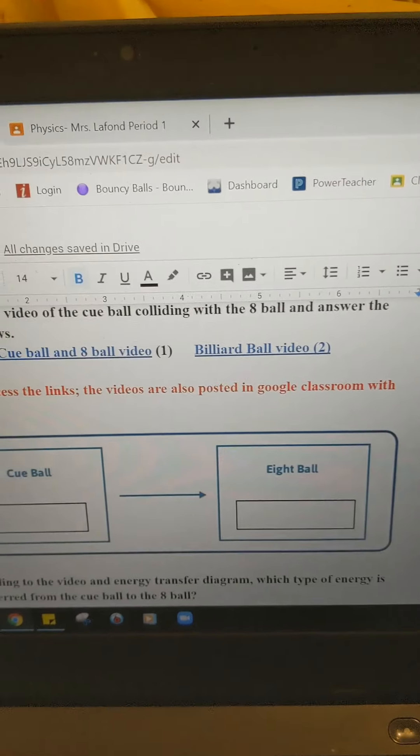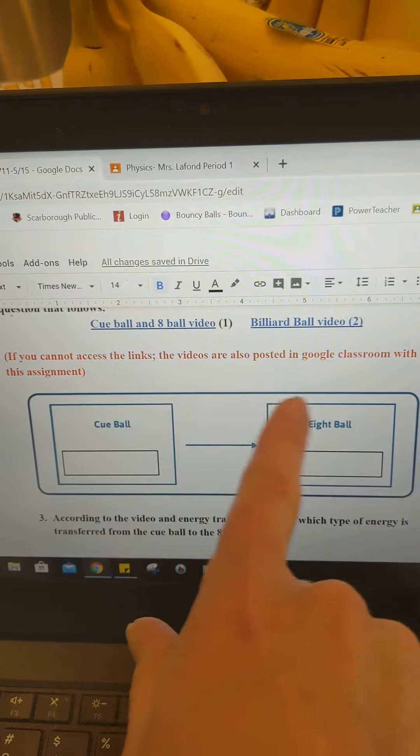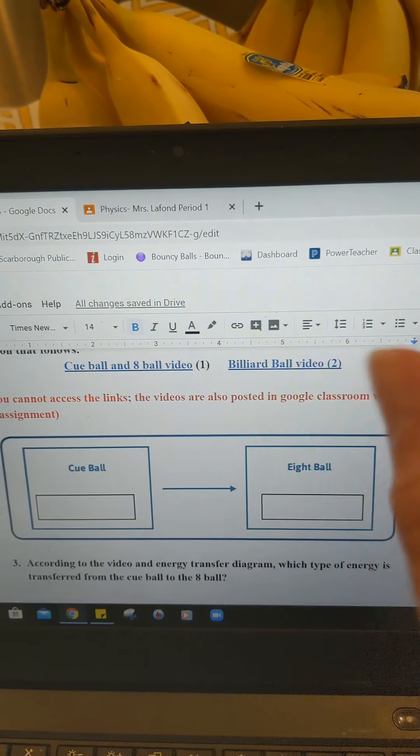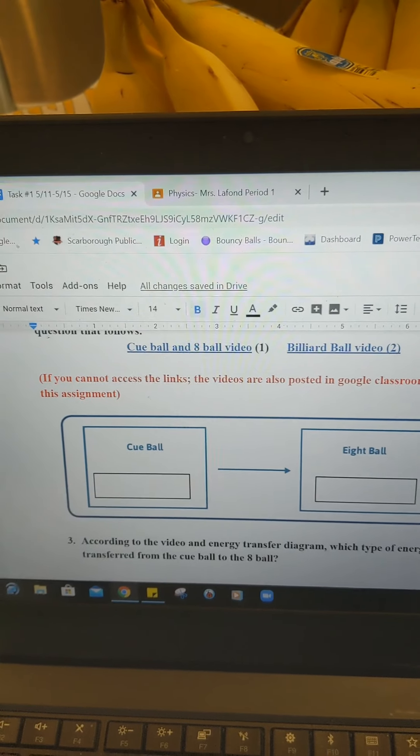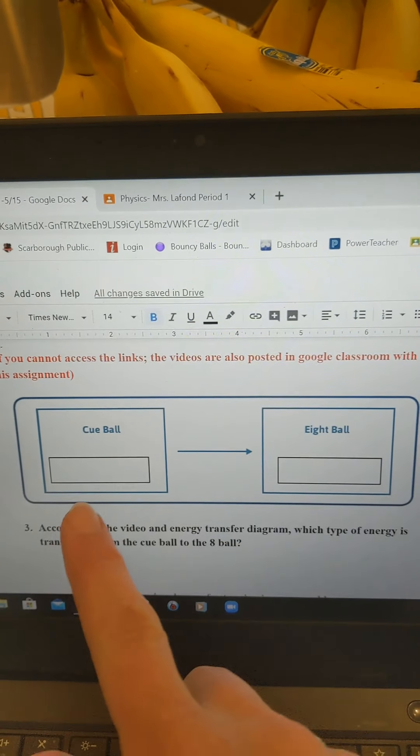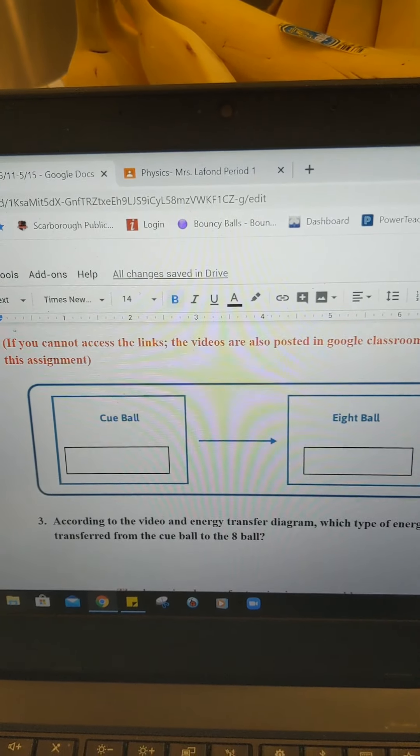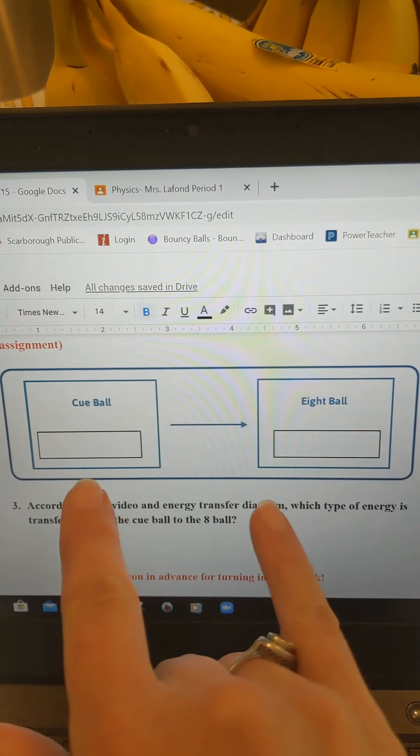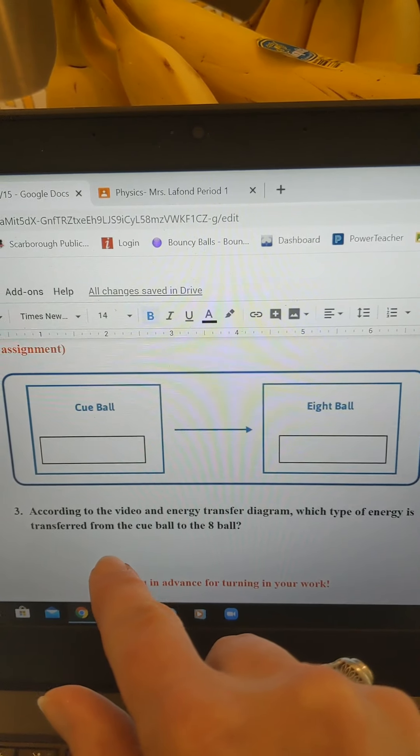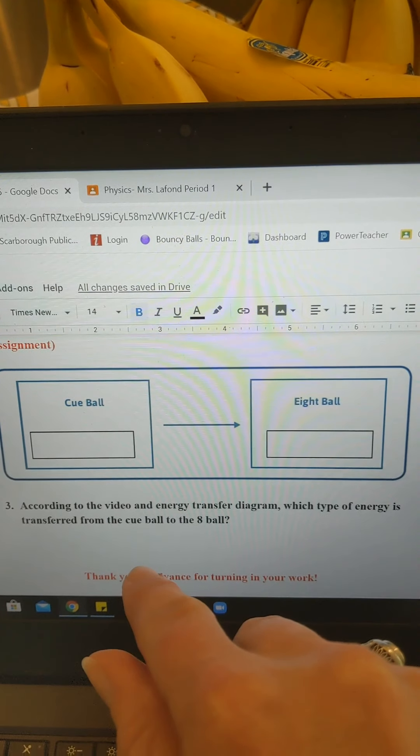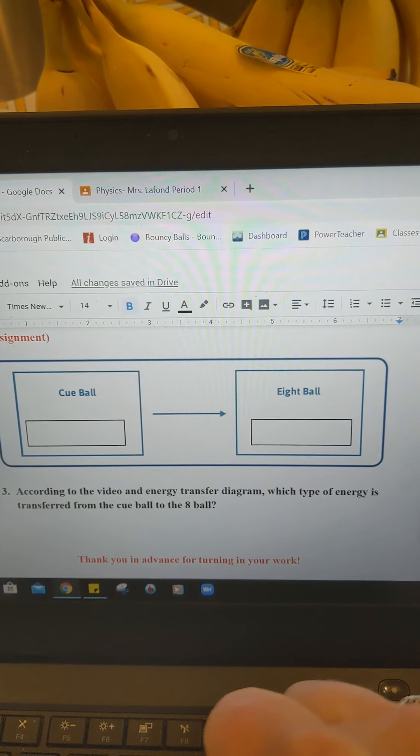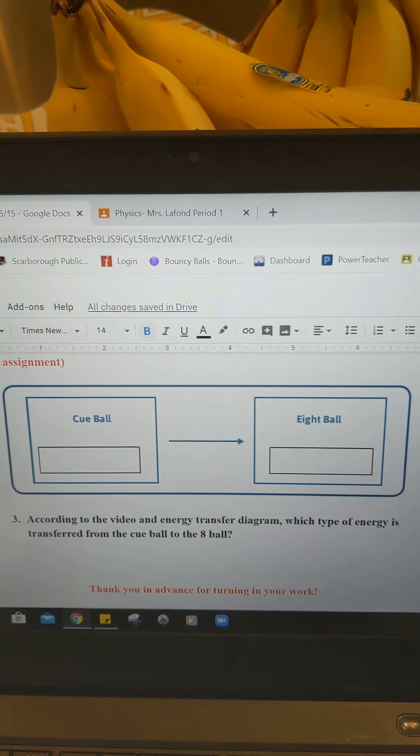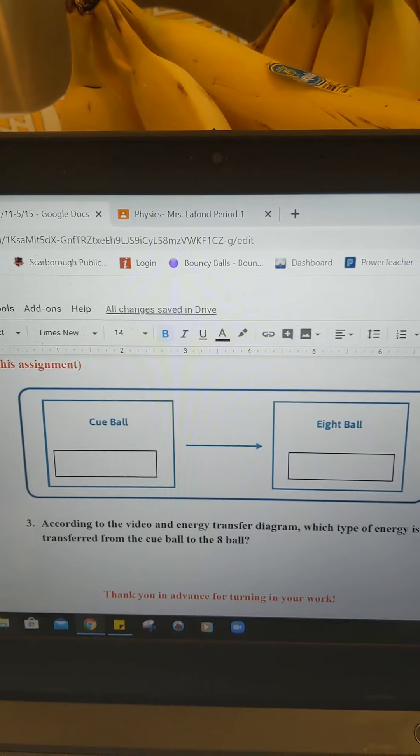But they're billiard balls. And note, I tried to link them in here, but if you can't access them, I also posted them under the assignment in Google Classroom as separate links. So you have the cue ball and the eight ball. You're going to watch those videos. According to the video and the energy transfer diagram, which type of energy is transferred from the cue ball to the eight ball? And then you're done. Good luck.